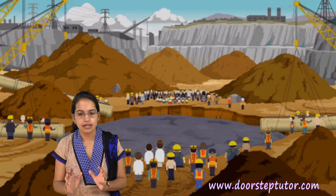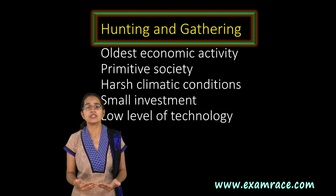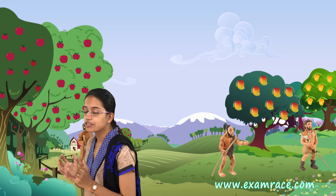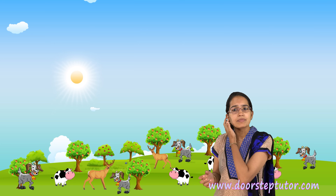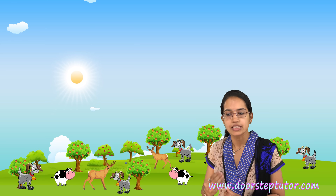Let's begin with the very first one — hunting and gathering. Through the birth of civilization, you had hunting and gathering activities where man used to consume food resources directly from nature, and therefore it's considered one of the oldest and most primitive ways of economic activity. Small investment is required and it does not involve a high level of technological expertise.